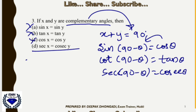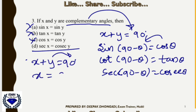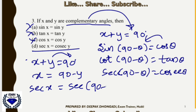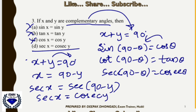Since x+y=90°, we get x = 90°−y. Taking sec on both sides: sec x = sec(90°−y). Using the identity sec(90°−θ) = cosec θ, we get sec x = cosec y. So option D is the correct answer.